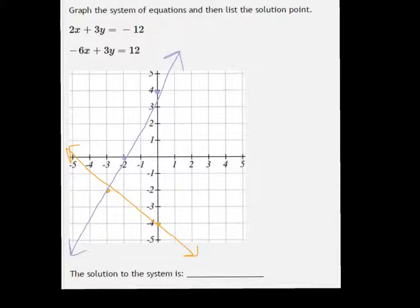So it looks like, and you know when you graph things by hand they might not come out all that great, but it looks like the point negative 3, negative 2 works for both of them. So let me just double check that.